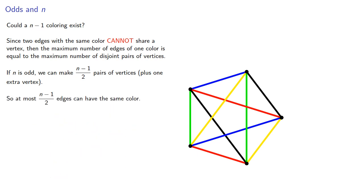So, at most, n minus 1 halves edges can have the same color. But there are n choose 2 edges, and so we need at least n colors.